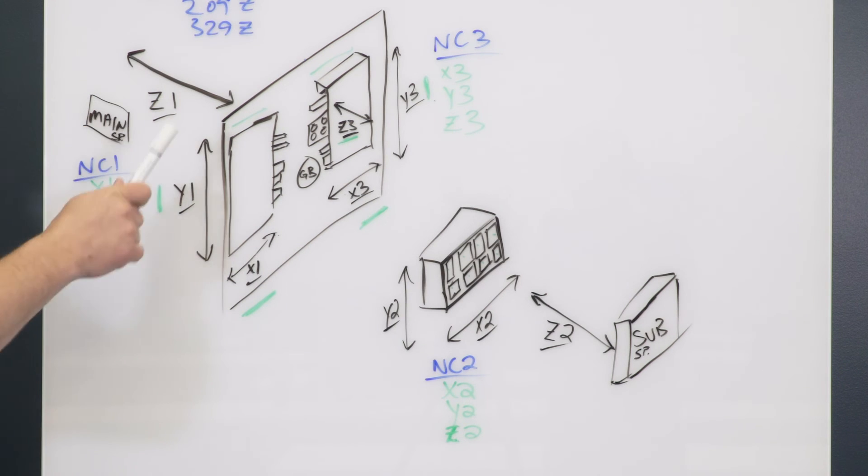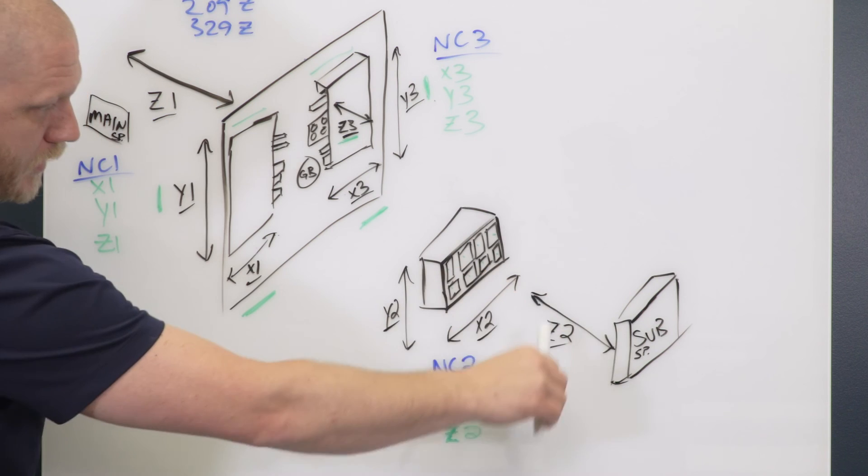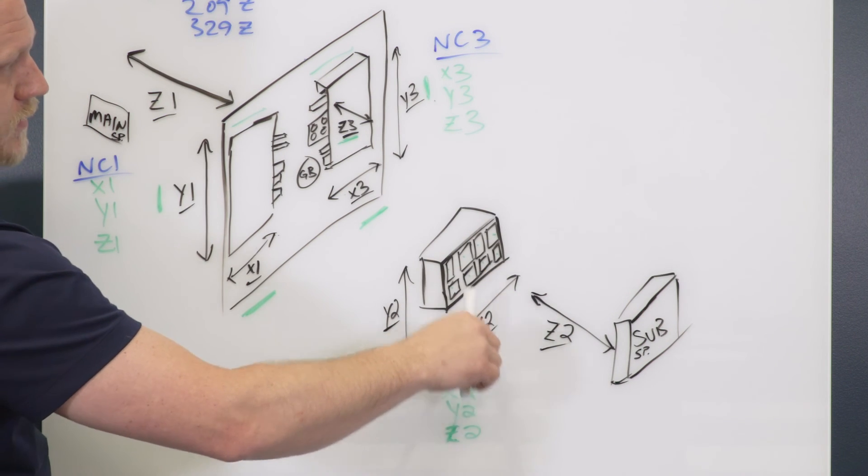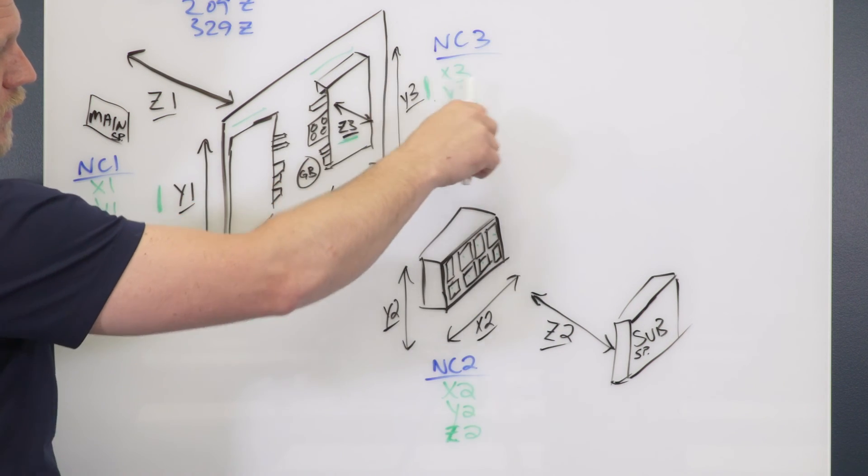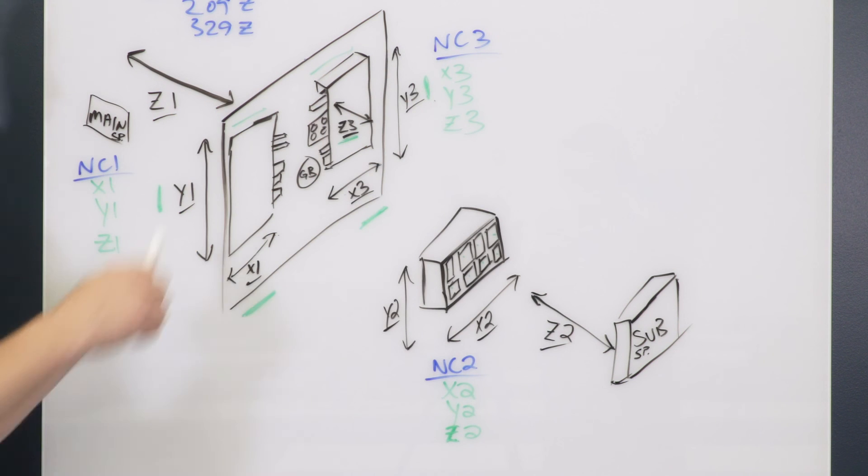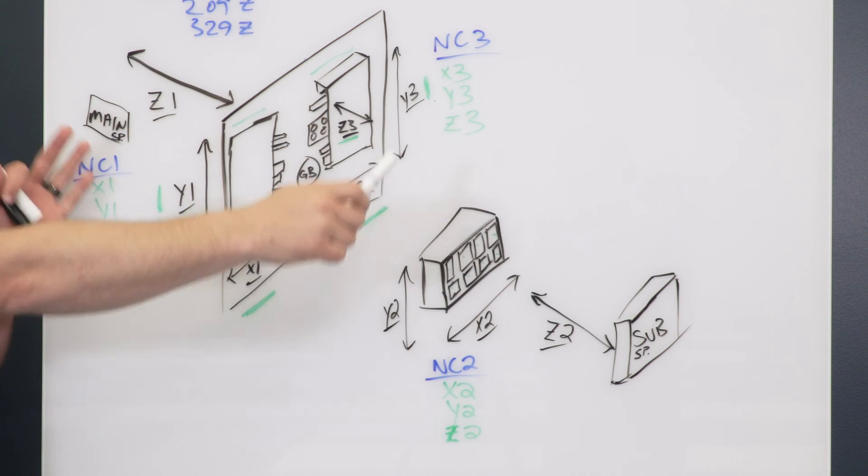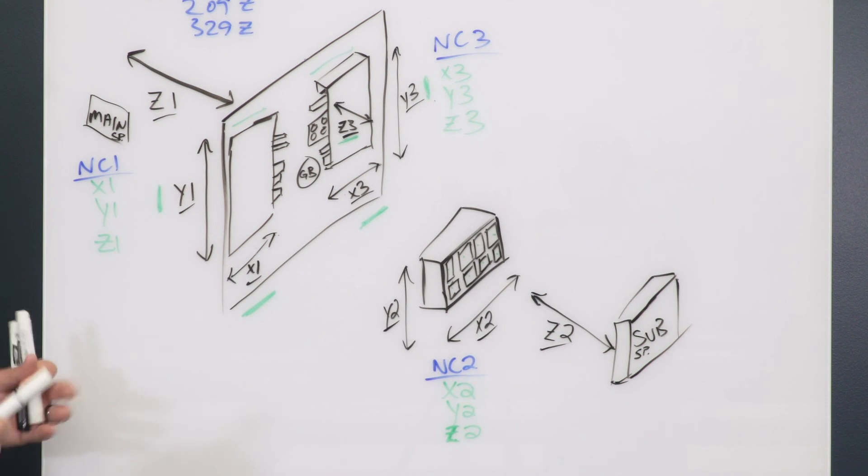Just to reiterate: NC1 is XYZ1 front gang slide and main spindle. NC2 is sub spindle and sub spindle gang slides. And NC3 is going to be XYZ3 rear gang slide. That would be how the axis designation works on a three-path control compared to a two-path control.